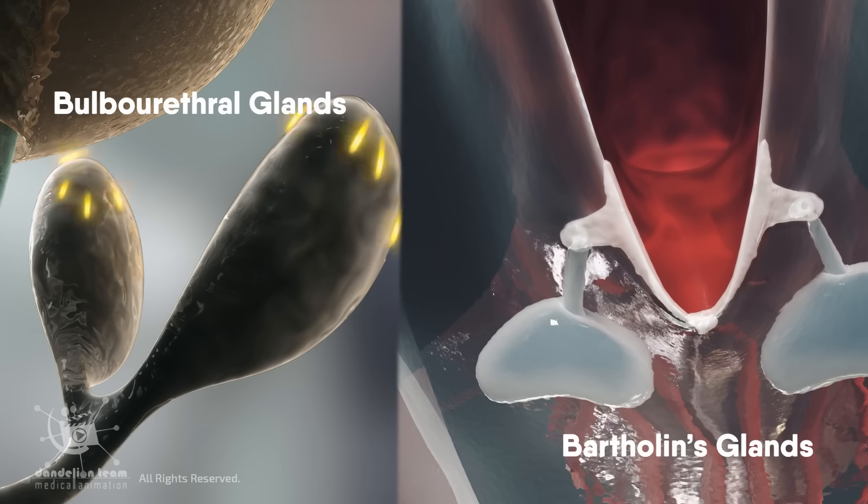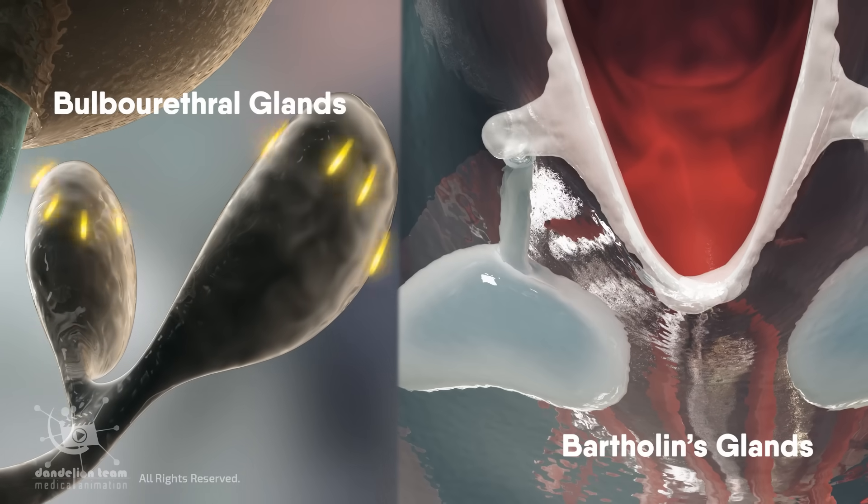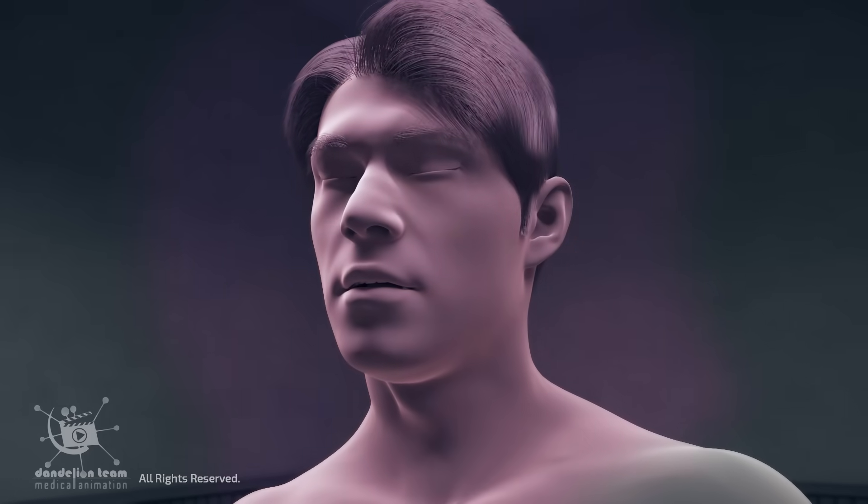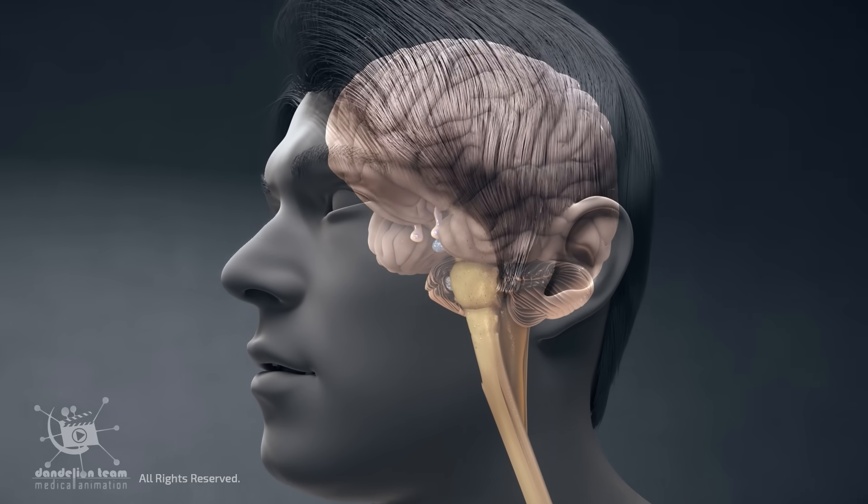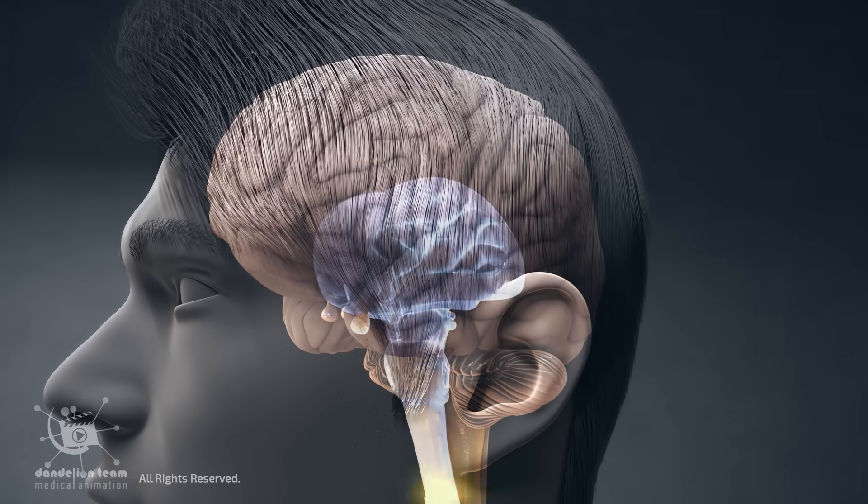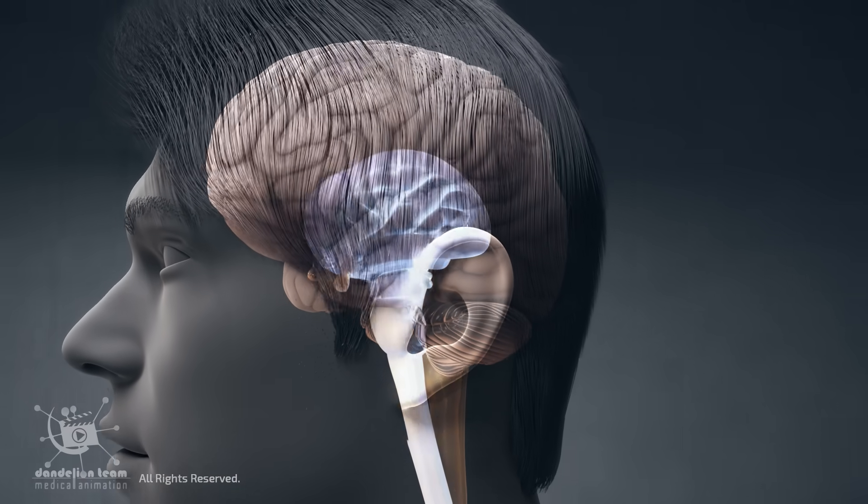These glands are activated during sexual arousal, driven by signals from the brain. Sexual arousal begins with erotic thoughts, touch, or visual stimuli, activating brain regions like the limbic system, which governs emotions and arousal.